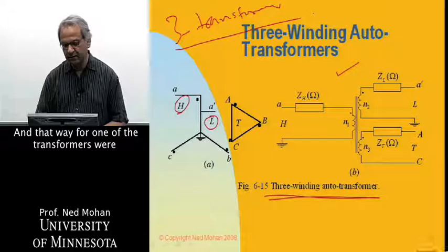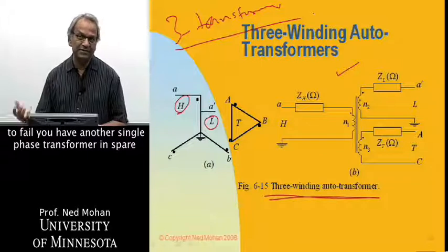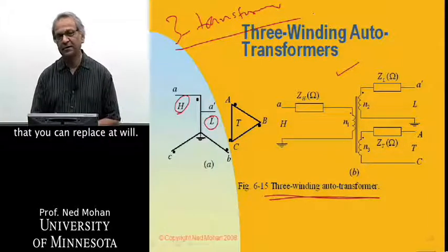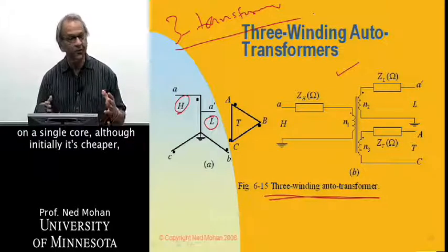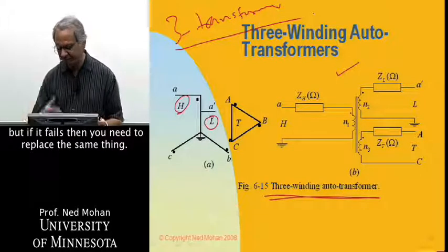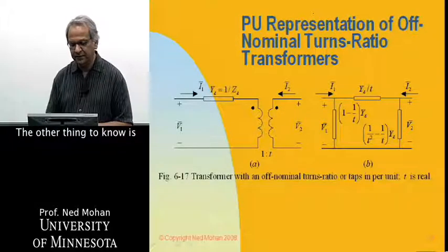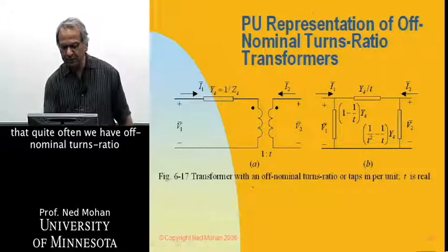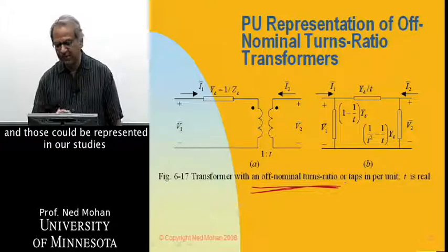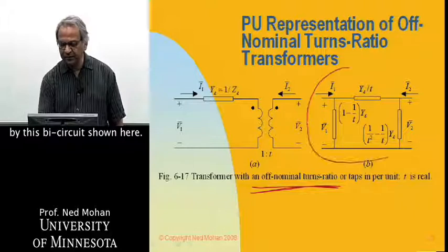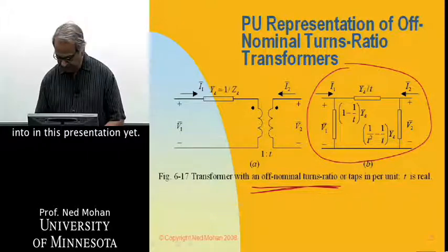And that way, if one of the transformers were to fail, you have another single-phase transformer in spare, which you can replace it with. But if you're using a three-phase transformer where everything is on a single core, although initially it's cheaper, but if it fails, then you need to replace the whole thing. So there are pros and cons. The other thing we have to know is that quite often we have off-nominal turns ratios, and those could be represented in our studies by this pi circuit shown here. And again, that is the detail that I will not go into in this presentation here.